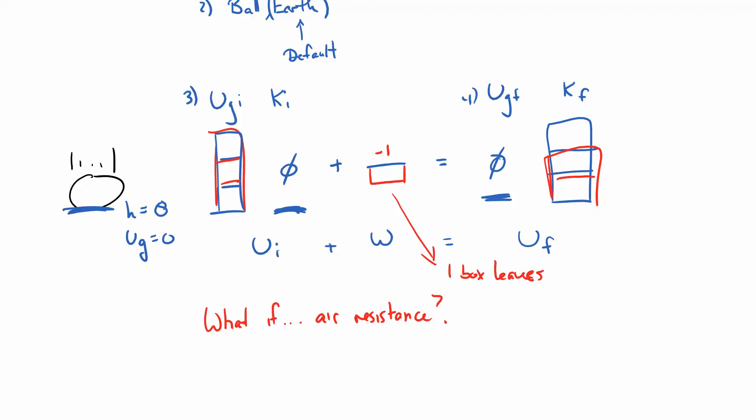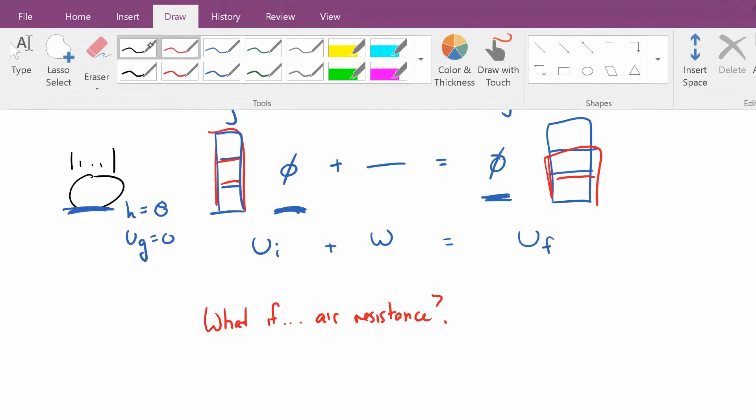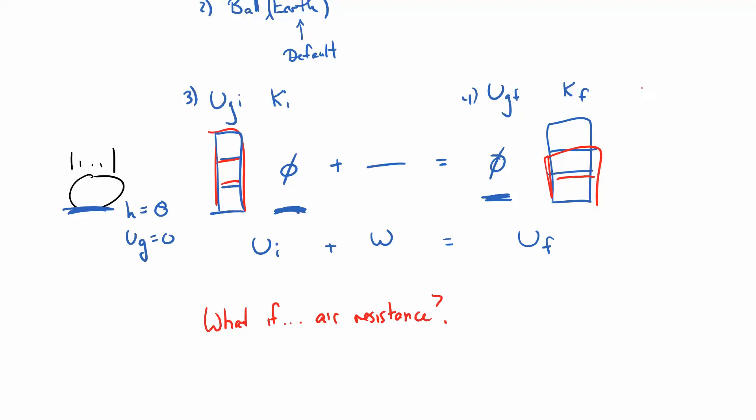So this is saying one box of energy left my system. Right? If we go back, negative work is energy leaving our system. So this is something taking energy out. Alternatively, maybe instead of thinking about it doing work, I'm going to say that this is going to cause, you know, friction is going to cause my ball to heat up. So I'm going to have some delta U to internal and I'm going to have one bar of internal energy. Both of these are viable.